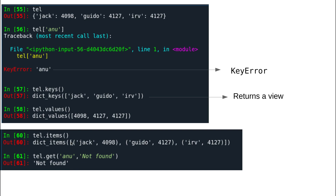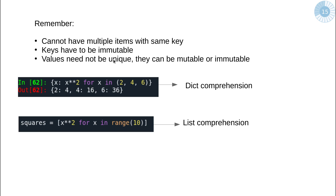Remember that we cannot have multiple items with the same key. Keys must be made of immutable objects, whereas values need not be unique. Keys have to be unique and immutable, whereas values can be types like strings or lists — they can be mutable or immutable.